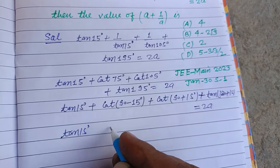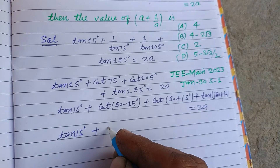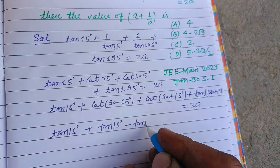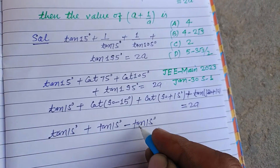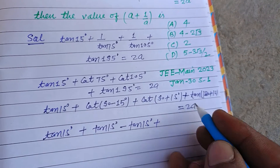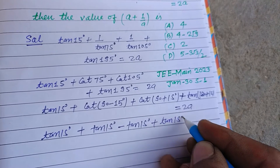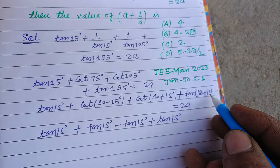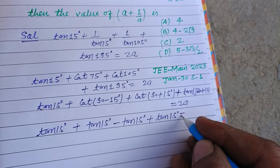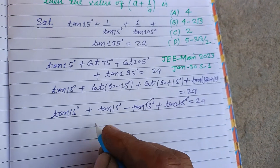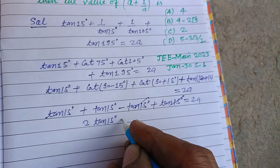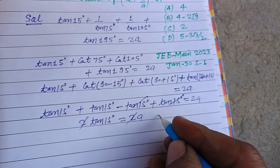Now, cot(90 - θ) = tanθ, cot(90 + θ) = -tanθ. In the third quadrant, tan is positive, so cot(180 + 15) = cot15. After substitution and cancellation, we get tan15 + tan15 + tan15 = 2a, which simplifies to 3·tan15 — wait, these cancel giving 2·tan15 = 2a, so a = tan15.